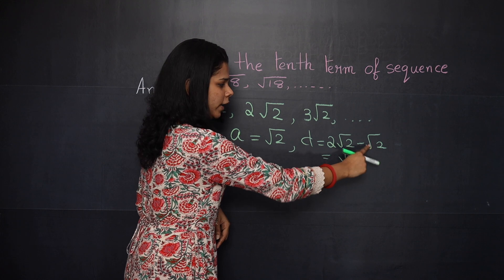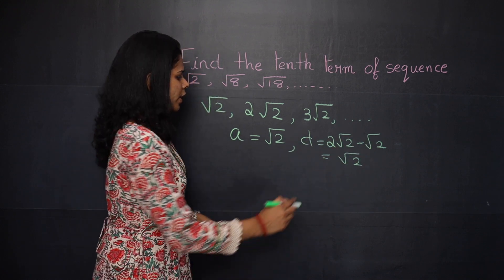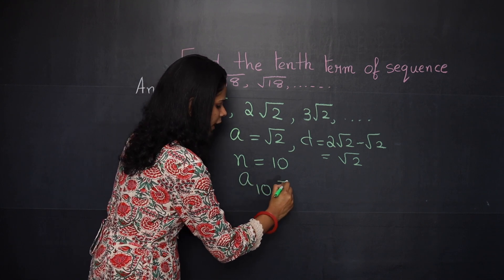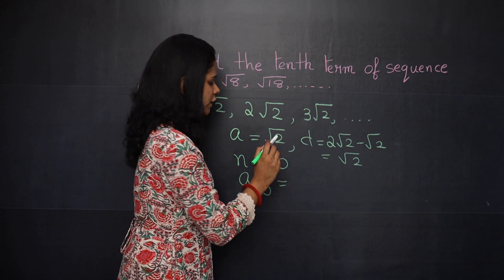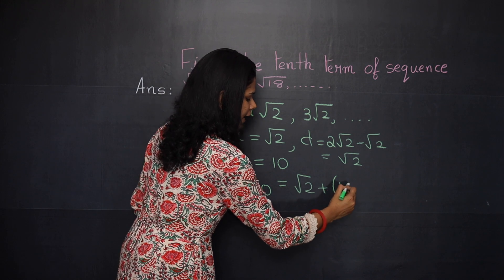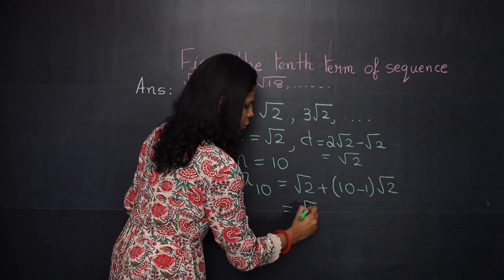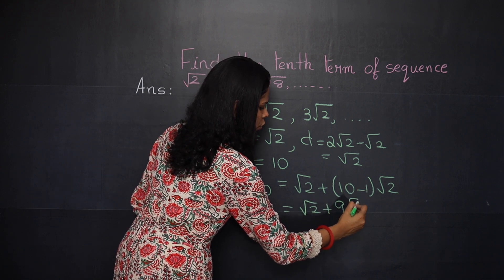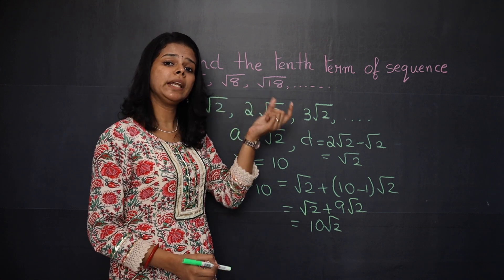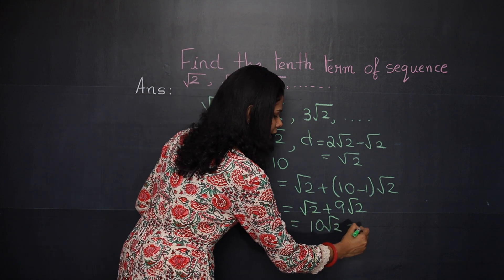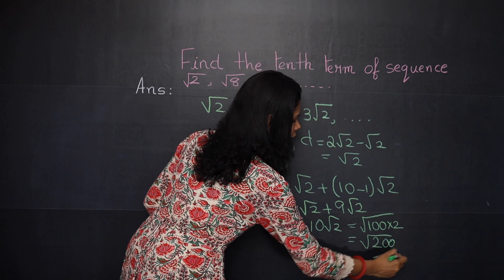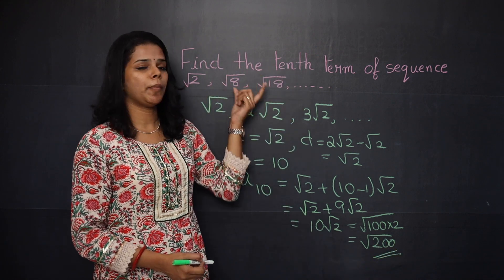Now, n = 10. So a₁₀ = a + (n − 1) × d = √2 + (10 − 1) × √2 = √2 + 9√2 = 10√2. But in the question all the numbers were inside the roots, so 10√2 can be written as √(100 × 2) = √200. So √200 is the 10th term of the given sequence.